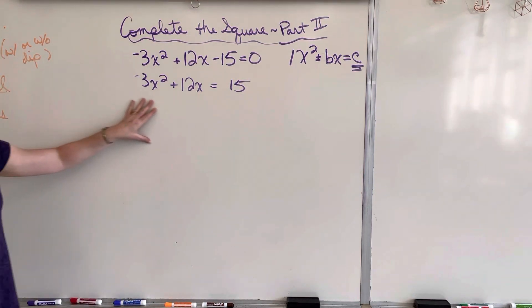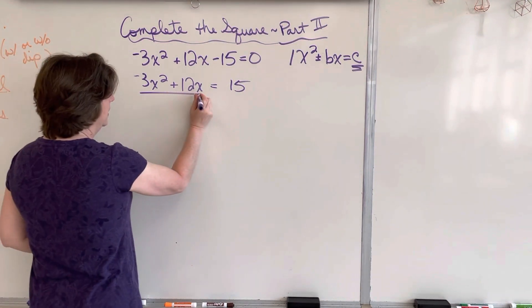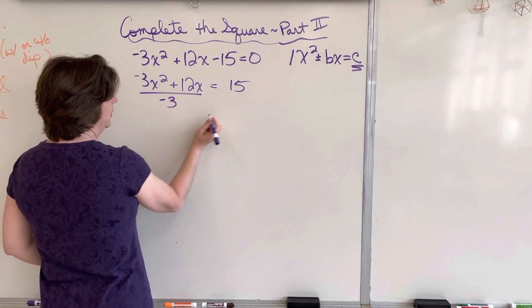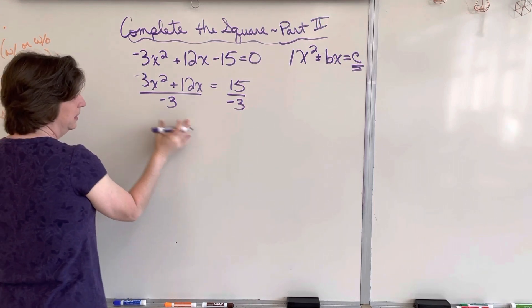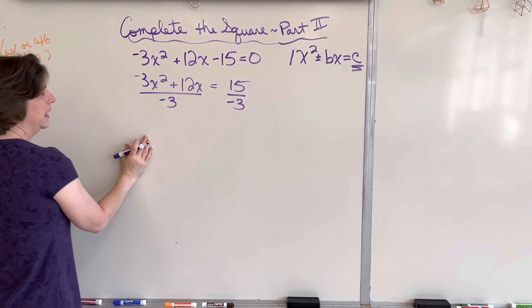The second problem is I don't have a 1 in front of my x squared. So I have to take everything on this side and divide it by negative 3. Everything on the other side, what you do to one side, you do the same on the other. Divide by negative 3.